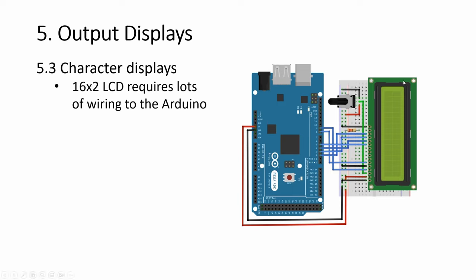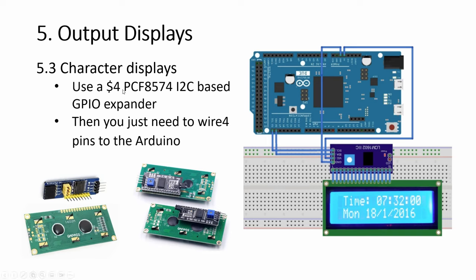The 1602 LCD by itself requires a lot of wiring, which is quite a pain. You can simplify by getting an I2C card — you stick it onto all the pins at the back, and then you only have four pins: ground, VCC, SDA, and SCL. This simplifies the wiring a lot.